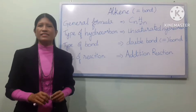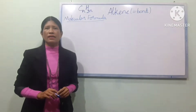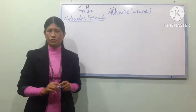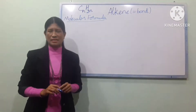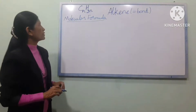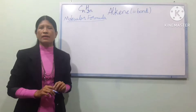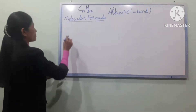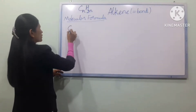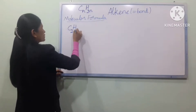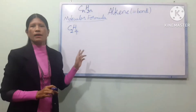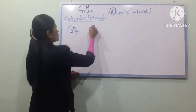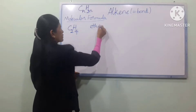We are going to talk about the general formula. The general formula for alkenes is CnH2n. CnH2n is based on the carbon number. So for C2, the formula is C2H4.